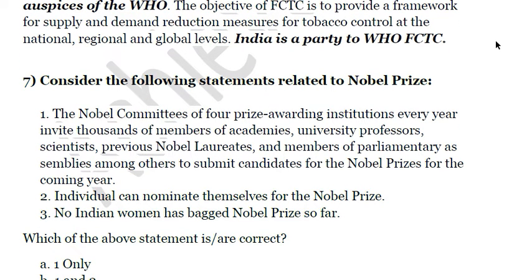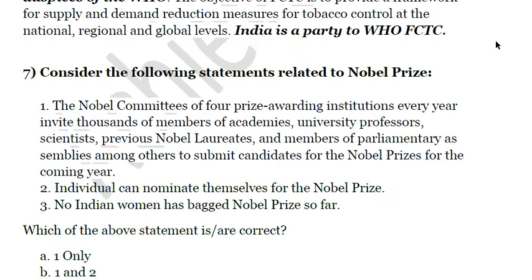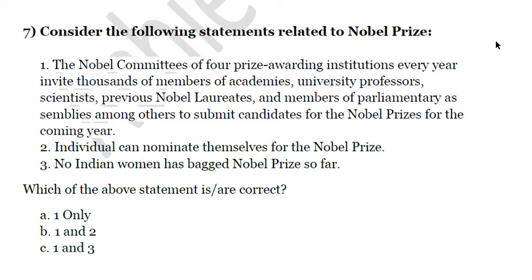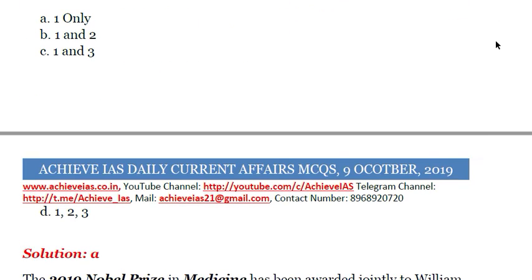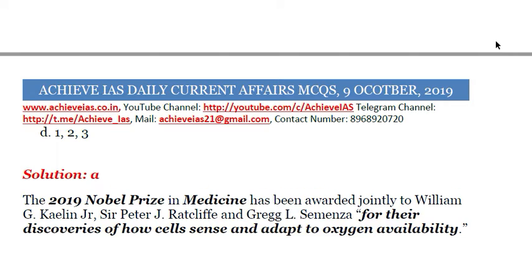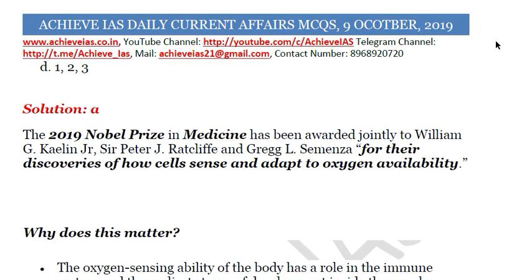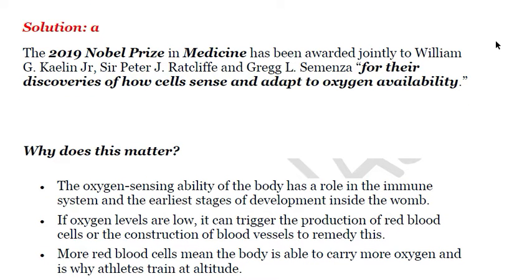Next, consider the statements related to the Nobel Prize. The first statement is quite lengthy — you can pause the video to read it — and it is most likely correct. The second statement says individuals can nominate themselves for the Nobel Prize. The third says no Indian woman has won the Nobel Prize so far. Only the first statement is correct. Apply your mind before attempting any question rather than simply relying on the length of a statement.